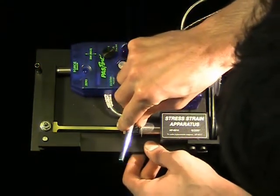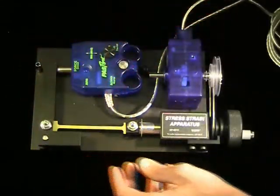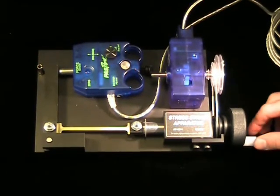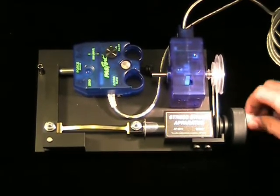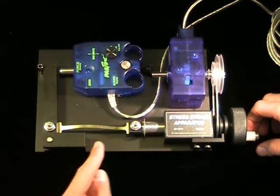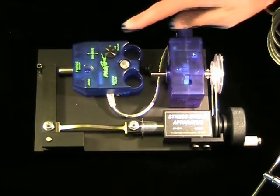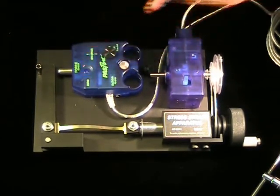Do not tighten the nut so much, however, that you strip the threads. Now turn the crank counter-clockwise so that the lever arm can be pushed against the starting post without any tension remaining in the coupon. Finally, before you begin your test, press the zero button on the force sensor.